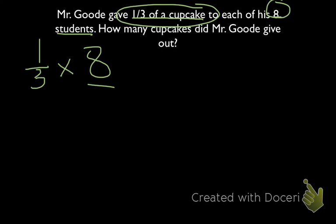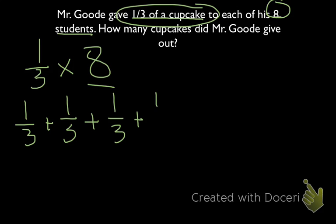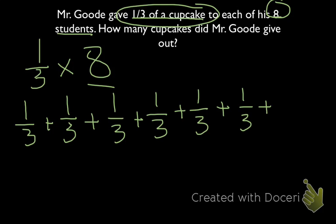Another way of looking at this is that we are taking 1 third and adding it 8 times. So that would be 1 third plus 1 third plus 1 third plus 1 third — that's 4 one-thirds, about halfway there. Then there's 5, there's 6, there's 7, and there is 8.